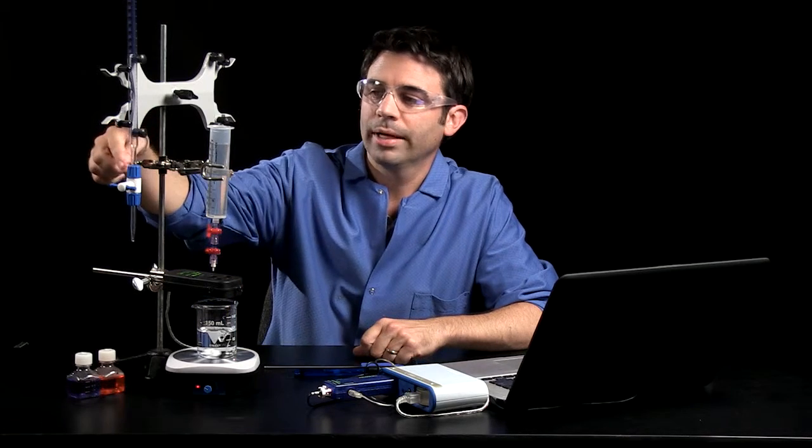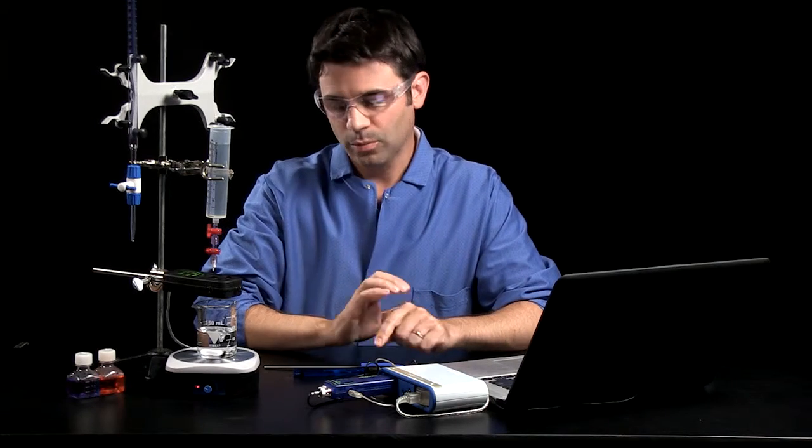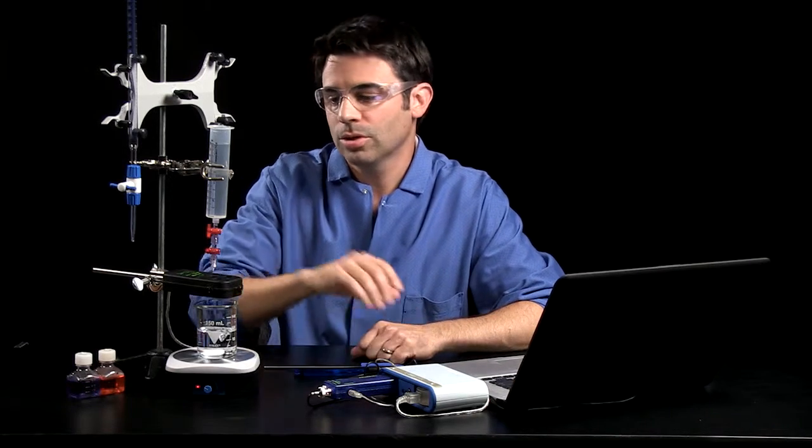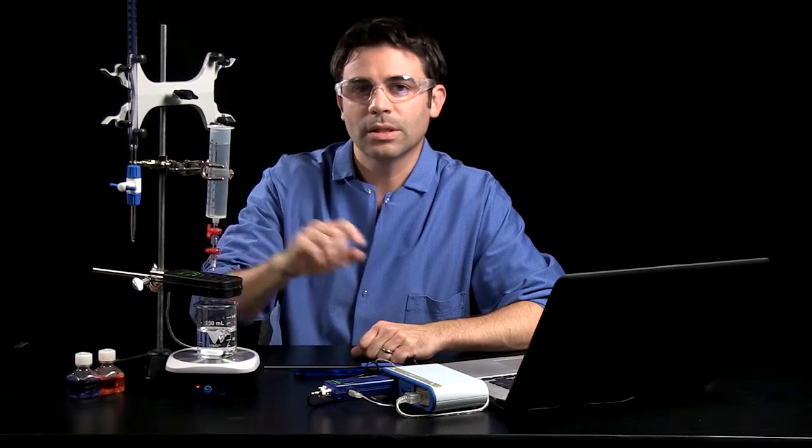Most titrations involve pH and a burette to monitor the volume of titrant added. In this case, we're going to do it a little differently. We're going to measure pH and temperature using our chemistry sensor, and we're going to use our drop counter and our drop dispenser to measure the volume of titrant added. So let's get this set up so we can see how it works.